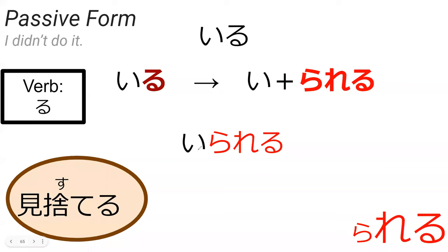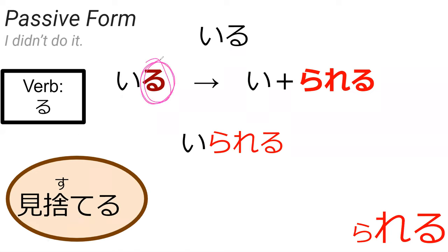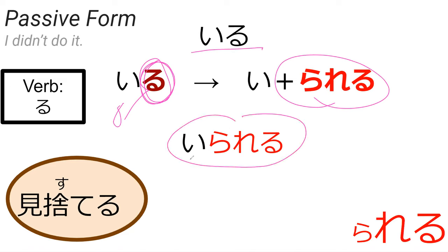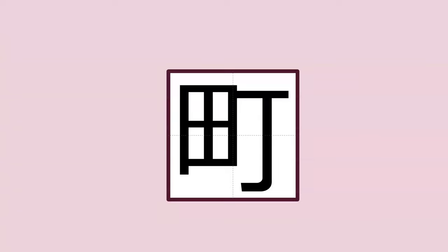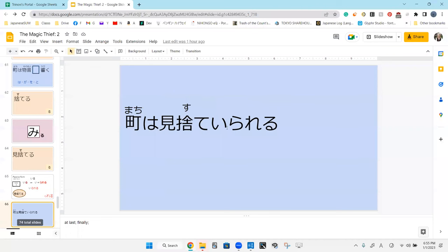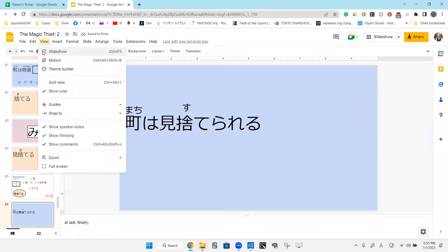So now we're actually learning the conjugation of passive form, specifically for ru-verbs. For ru-verbs like iru and misuteru, you take the ru at the bottom of the verb, throw it away, and add rareru. So iru becomes irareru — to passively exist. How would you change misuteru into passive form? — Drop the ru and add rareru — misuteru becomes misuterareru. — Perfect, misuterareru — to be forsaken.